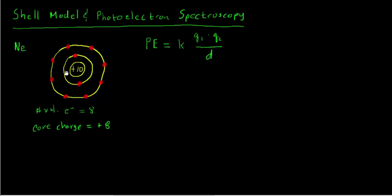Here we have a neon atom. Neon has an atomic number of 10, so there's a plus 10 charge in the nucleus. We've got this first inner shell that has two electrons, and the rest of the eight electrons are in the second shell. In the outer valence shell, we have eight electrons. Any one of these outer electrons might feel an attraction to the nucleus, but because the inner shell electrons are screening or shielding some of that nuclear charge, we say that electron feels an effective nuclear charge. We model this as core charge: the two inner shell electrons offset the positive charge, so plus 10 minus two gives us a plus eight core charge.